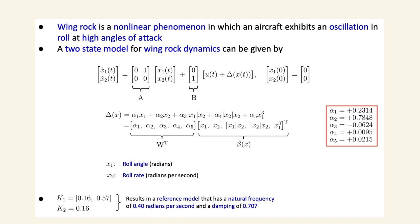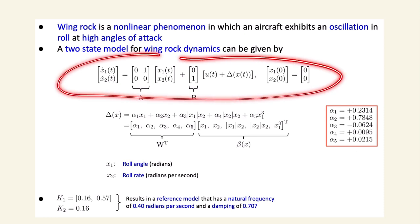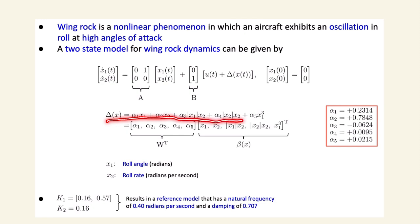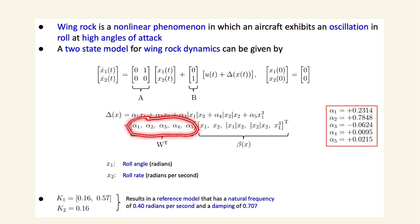As an example, consider wing rock dynamics — a nonlinear phenomenon where an aircraft exhibits oscillations in roll at high angles of attack. This is modeled as a second-order system where delta is the uncertainty with unknown parameters alpha. We rewrite delta as W^T * beta, where beta is a known basis. x1 is the roll angle in radians and x2 is the roll rate in radians per second.